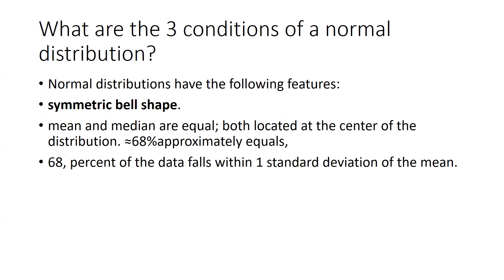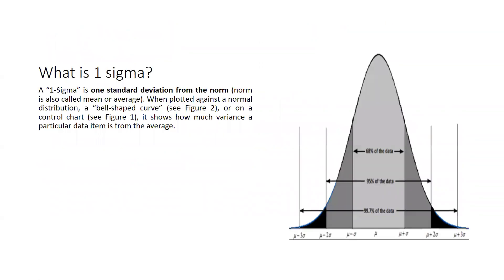These are the three conditions of normal distribution. Now, what do we mean by one sigma? One sigma is one standard deviation from the norm, also called the mean or average. When plotted against a normal distribution — a bell-shaped curve — or on a control chart, it shows how much variance a particular data item is from the average.